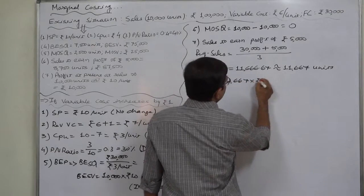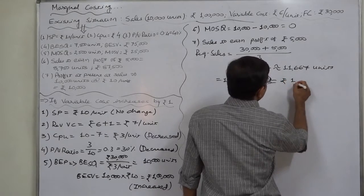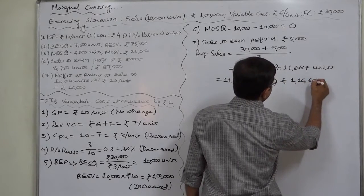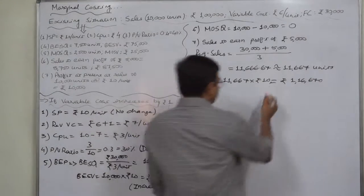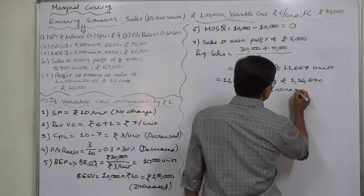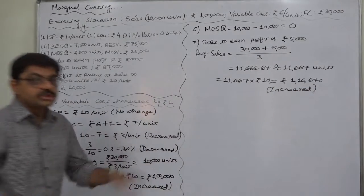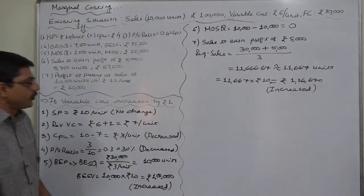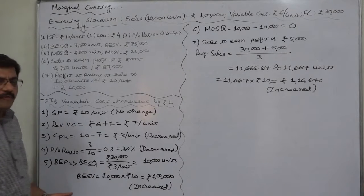it will be ₹1,16,670. In both terms, the margin of safety or the required sales has increased. Now we need more sales to earn the same desired profit.